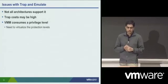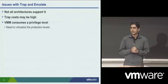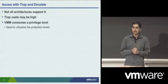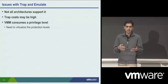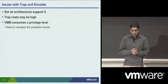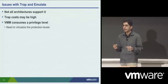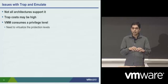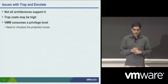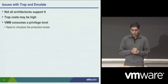This would give you much better performance than instruction interpretation, but the problem is that not all architectures support it. In fact, two of the most prevalent architectures today — Intel x86 and ARM — are not strictly virtualizable according to this formal definition, because they do have some instructions that do not either trap or execute identically on both privileged and unprivileged modes. The trap costs themselves can be very high sometimes, and the virtual machine monitor ends up consuming the privileged level, leading to a need to virtualize the memory protection levels — a concept called ring compression.